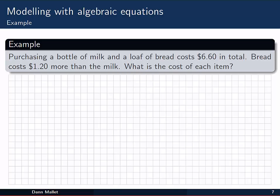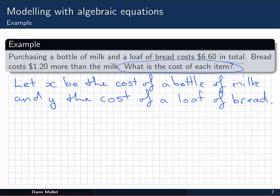Okay, so I've read through the problem a couple of times now, and I know that the question I'm being asked is, what is the cost of each item? So the unknowns that I'm dealing with is the cost of a bottle of milk and the cost of a loaf of bread. I'm going to introduce some variables for those. So I have x as the cost of a bottle of milk, and y as the cost of a loaf of bread. Now based on the information I've given, I'm going to write down any relationships that I can get from the information that relates x and y. First of all, I'm told that a bottle of milk and a loaf of bread together costs $6.60. So x plus y must be equal to $6.60.